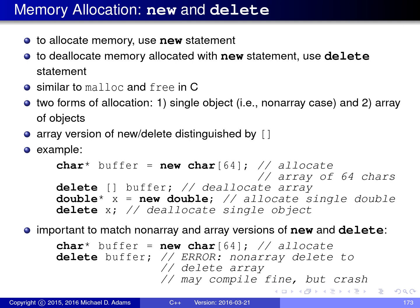Now I'd like to briefly talk about memory allocation in C++. To allocate memory on the heap, we use the new statement. To deallocate memory allocated with new, we use the delete statement — similar to malloc and free in C, though with some differences. There are two forms of new and delete: the non-array version, which allocates and frees a single object, and the array version, which allocates and frees whole arrays of objects. They are distinguished by square brackets.